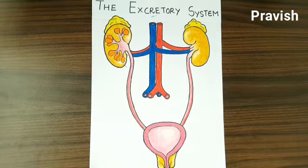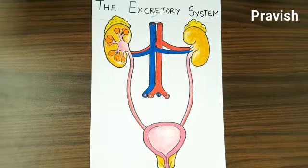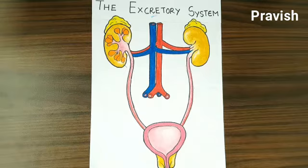This excretory system mainly consists of three organs: the kidneys, lungs, and skin.